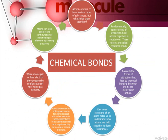Atoms combine to form various types of substances, but what holds them together? Fundamentally, some forces of attraction hold atoms together in substances. These forces are called chemical bonds. Basically, the forces of attraction that lead to chemical bonding between atoms are electrical in nature. The electronic structure of an atom helps us to understand how atoms are held together to form substances.